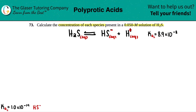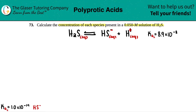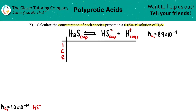Since we're talking about weak acids, we have to do an ICE table because we're only given the starting information. This 0.05 molarity is of the H₂S only — that's what we started with. Initially, they only told us we had 0.050 molarity of H₂S. We did not start with any HS⁻ or H⁺, so those are 0 and 0.